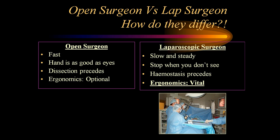The laparoscopic surgeon is different from the open surgeon. An open surgeon usually performs any surgery very fast because of good depth perception and tactile feedback — you can put your hand and blindly mobilize the appendix, the hiatus region, or take the right and left vagus in a matter of few minutes. Ergonomics is a word which was never heard of in the era of open surgery.